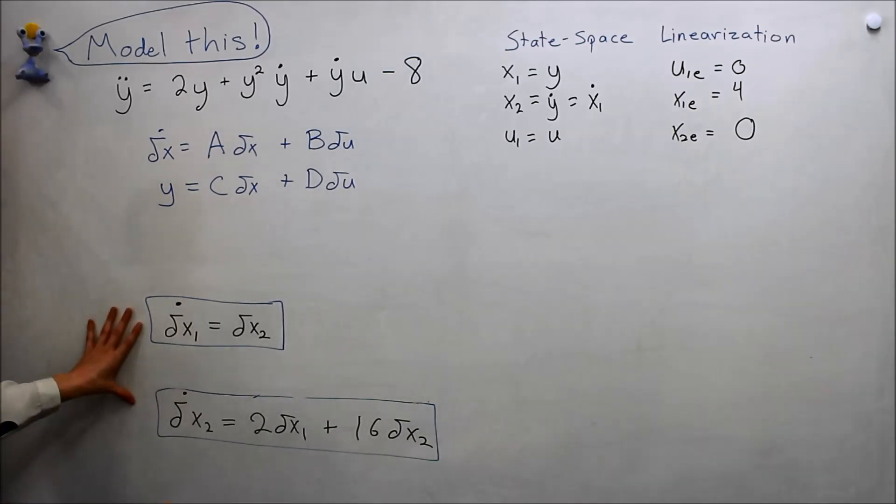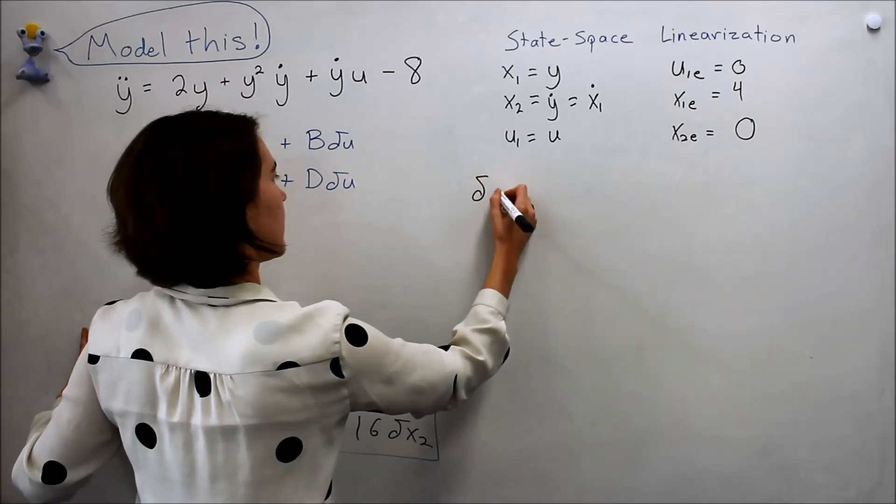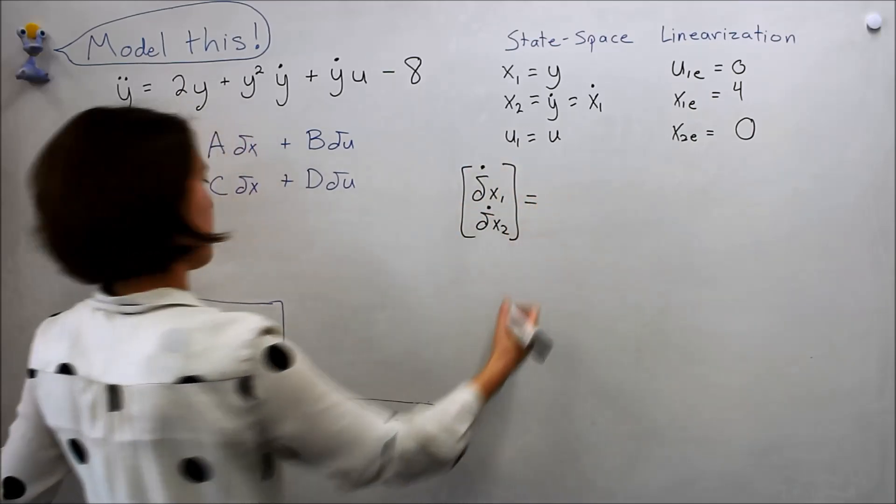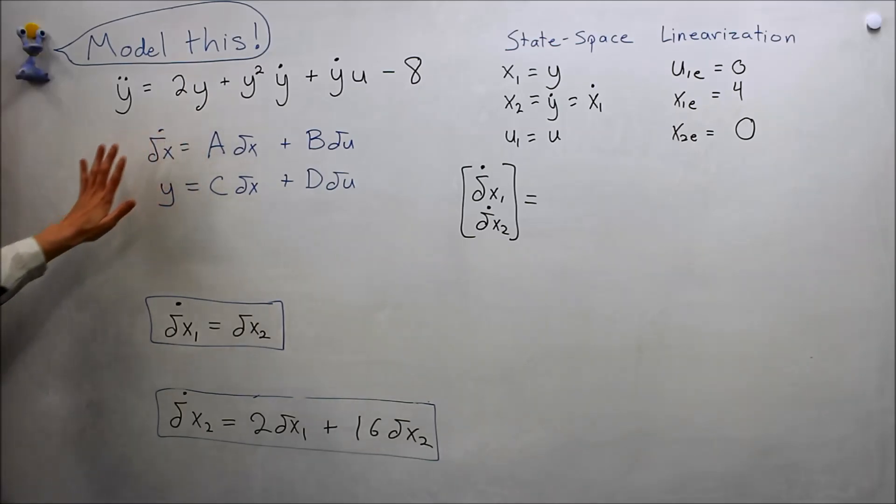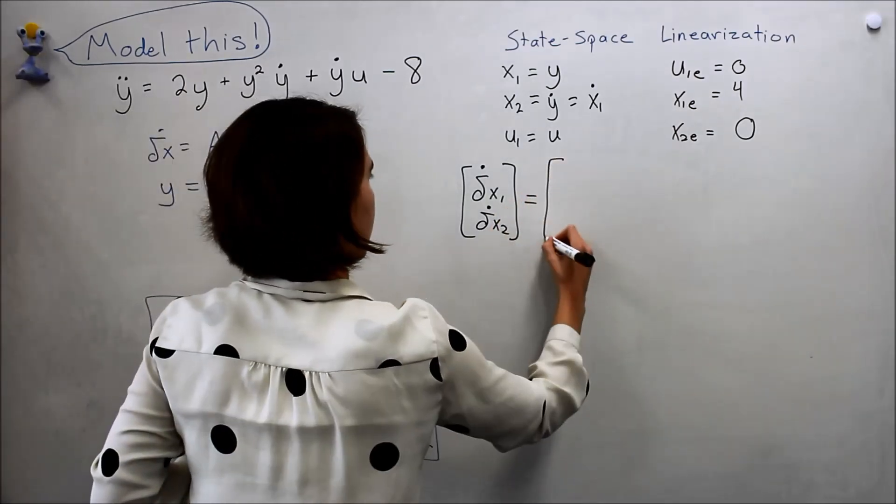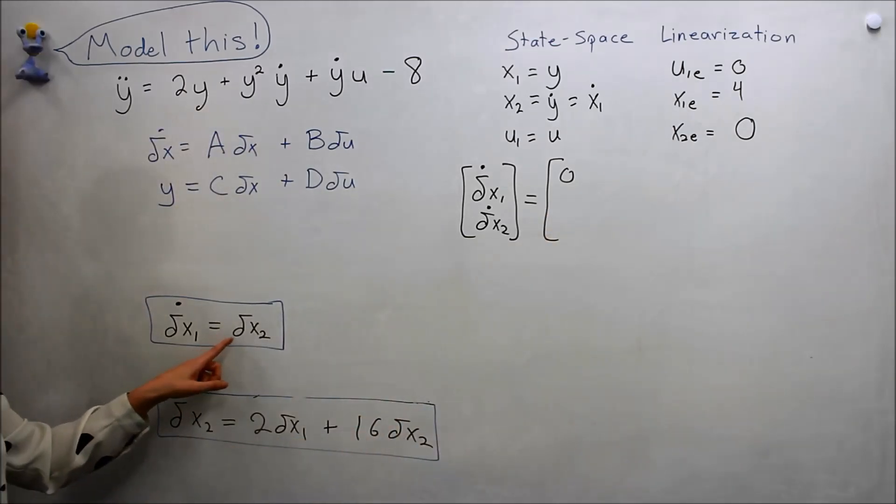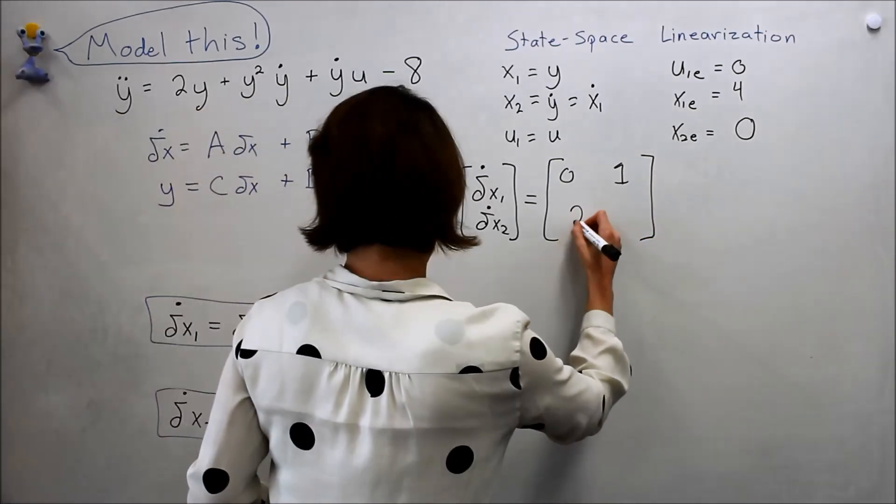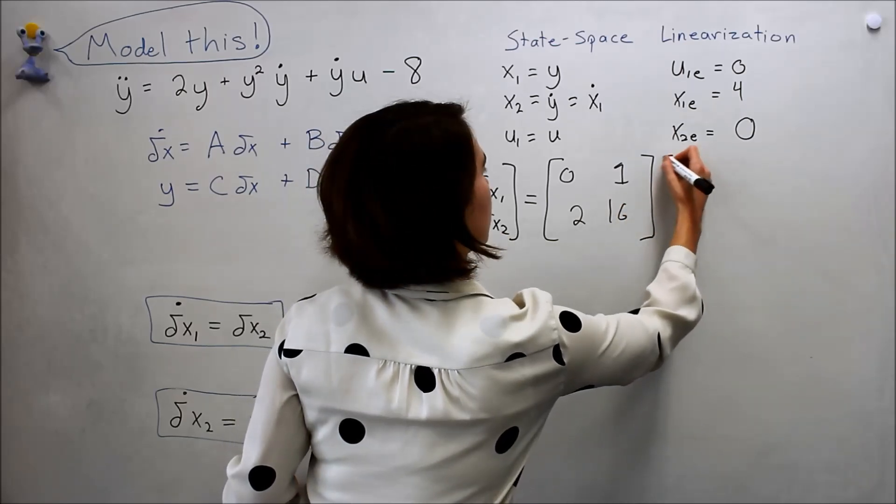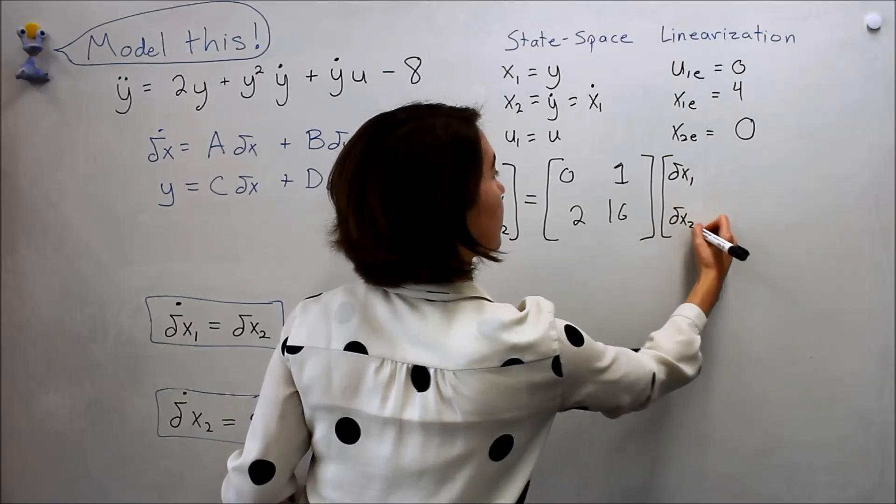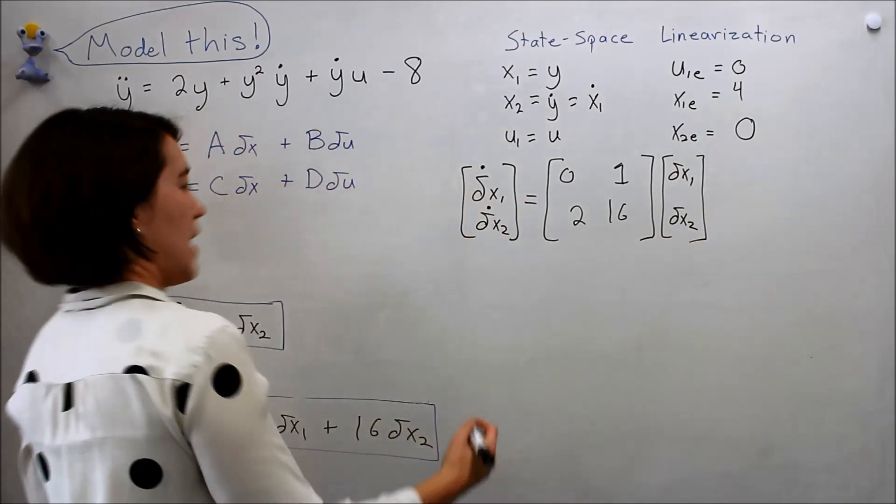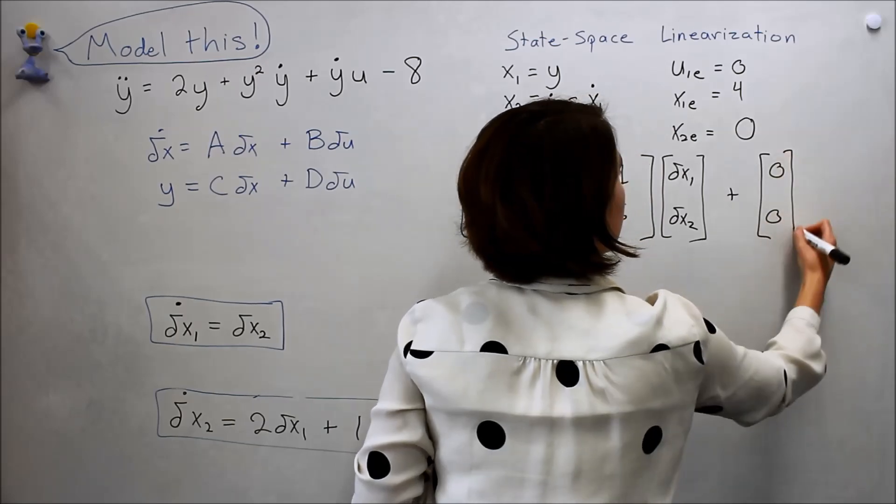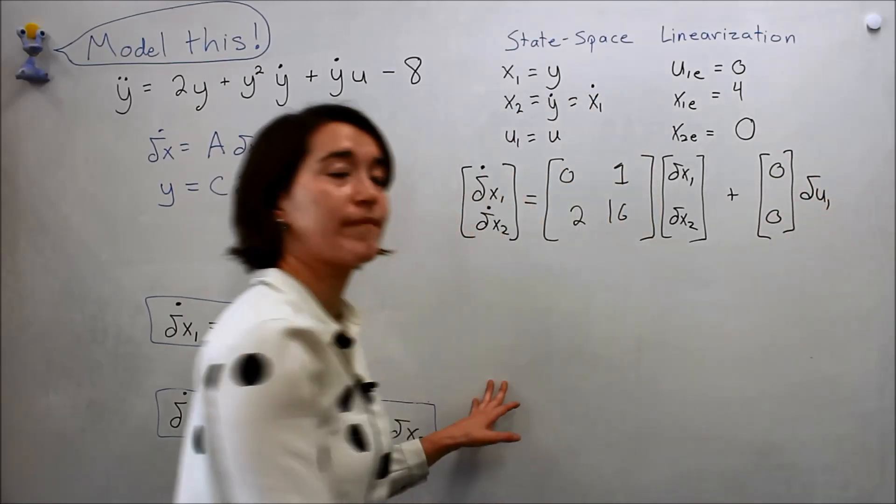We can definitely do that from here. Delta x1, delta x2, we get the derivatives of both of these. And the A matrix: we see that it doesn't depend on delta x1, so it's a zero and then a 1. And then here we have a 2 and a 16, times delta x1 and delta x2. These are our states now, our linearized states. They don't depend on u, but let's just write it down to be clear, so B here would be zero, zero, times delta u1.